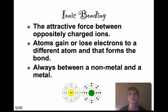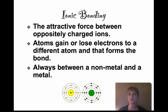Ionic bonding is the attractive force between oppositely charged ions. It's usually between a nonmetal and a metal, where there's an opposite charge on each atom, attracting each other like a magnet. Atoms gain or lose electrons to form the bond. For example, sodium has one extra electron in its outer shell, and chlorine's outer shell isn't full, so chlorine borrows that electron from sodium, forming sodium chloride.